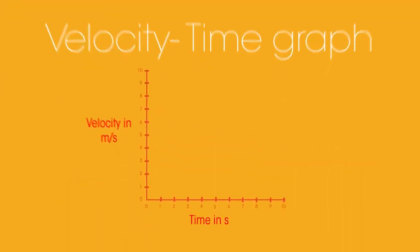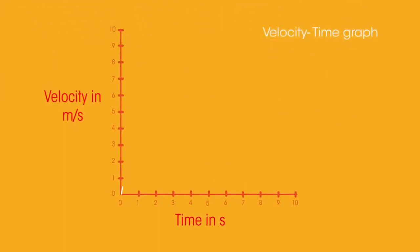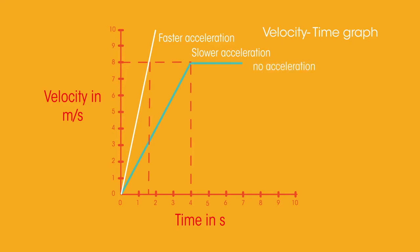If we look at acceleration on a velocity time graph, the different options look like this. This is faster acceleration than this because it's steeper, so is reaching each velocity in less time. No acceleration is happening. And then decelerating, so slowing down, is coming back from 8 meters per second velocity back down to 0 meters per second.